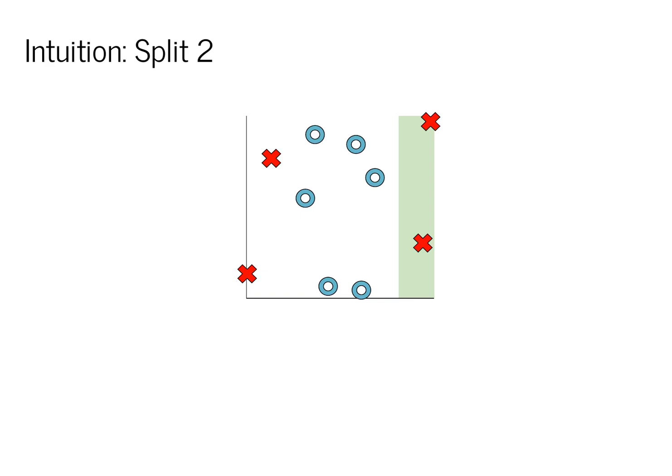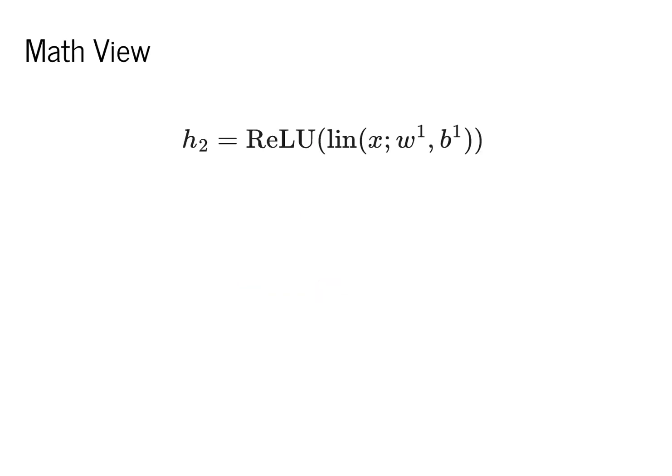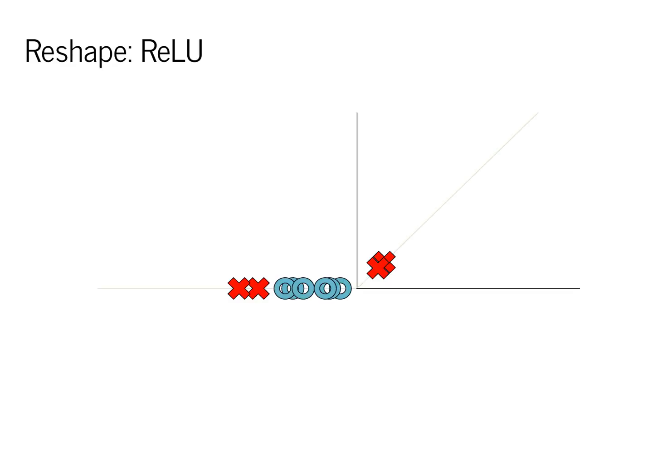We can do exactly the same thing to the right-hand points. Here we draw another linear separator which splits off the points on the right-hand side of the graph. The points in green have a positive value and everything else has a zero value. Here's what this looks like mathematically. We're simply applying a relu to a linear. That linear has a different set of parameters w1 and b1. We look at the reshaped relu. Two of these have a positive value and everything else has zero.